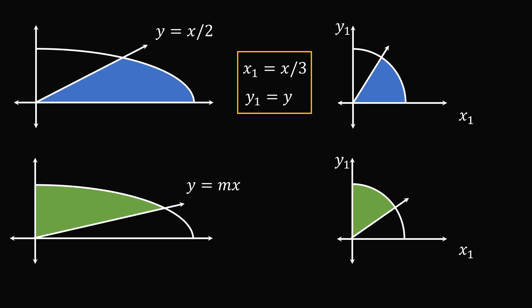The line y equals x over 2 will become the line y1 equals 3x1 over 2. Now this green area will be equal to the blue area if and only if they are reflections of each other about the line y1 equals x1.